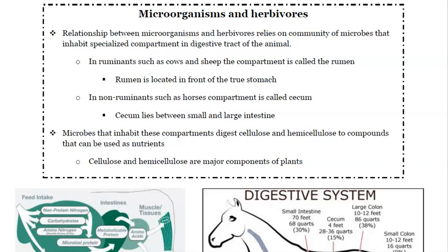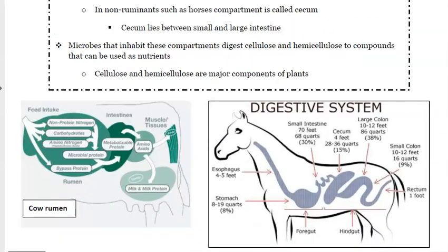Microorganisms also have important relationships with herbivores. Herbivores rely on plants, which aren't easy to digest. In ruminants such as cows and sheep, the relevant compartment is called the rumen, located in front of the true stomach. In non-ruminants like horses, it's called the cecum, lying between the small and large intestine. Microbes inhabiting these compartments digest cellulose and hemicellulose — major plant components — into compounds that can be used as nutrients for the animal, which otherwise couldn't easily break them down.